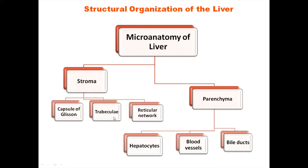The very important part is the parenchyma, which here consists of the hepatocytes and associated blood vessels in the form of small arteries, venules or sinusoids — very important here — and bile ducts. Together they form the hepatocyte-associated parenchyma; everything else comes under connective tissue stroma.